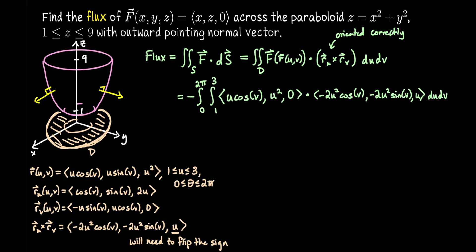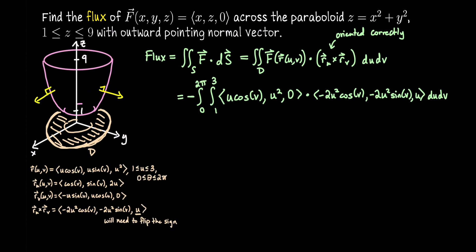All right, let's actually continue evaluating this now. So I'll leave the negative out front. 0 to 2π, 1 to 3. Let's do this dot product. We'll have negative 2u³ cosine² v minus 2u⁴ sine v plus 0 du dv.